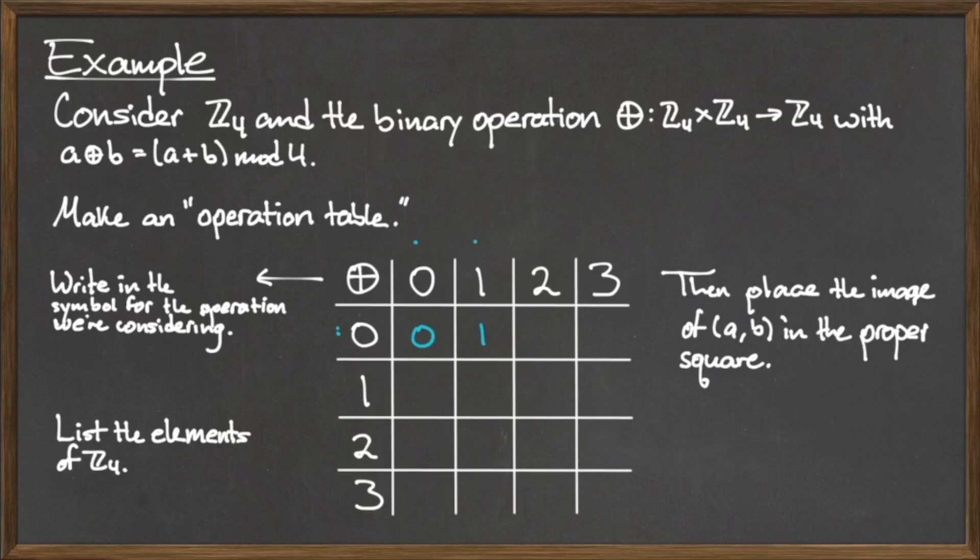For row 0 column 2, we have 0 + 2 mod 4, which is 2, so we fill in this entry with a 2. Finally, for row 0 column 3, we have 0 + 3 mod 4 is 3, so we fill in this entry with a 3.